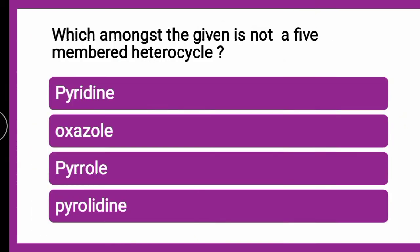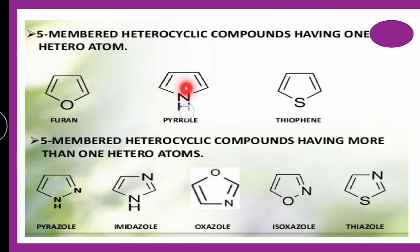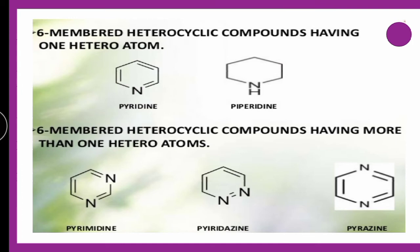Next question: which amongst the given is NOT a 5-membered heterocycle — whether pyridine, oxazole, pyrrole, or pyrrolidine? Oxazole is 5-membered, pyrrole is 5-membered, and pyrrolidine (the saturated form of pyrrole) is also 5-membered. The correct answer is pyridine, which is a 6-membered heterocycle.